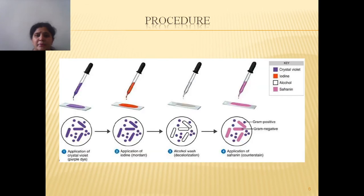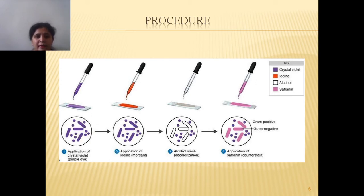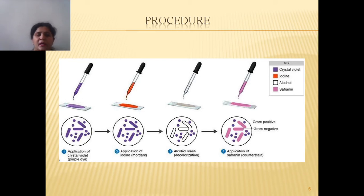Now let's see the procedure. First, take a grease-free slide, then make a smear of the microorganism. Air dry it, then heat-fix it by passing it over the Bunsen burner three to four times. Apply or flood your smear with the primary stain, crystal violet, and allow it to react for five minutes. Then add gram's iodine and allow it to react for two to three minutes.